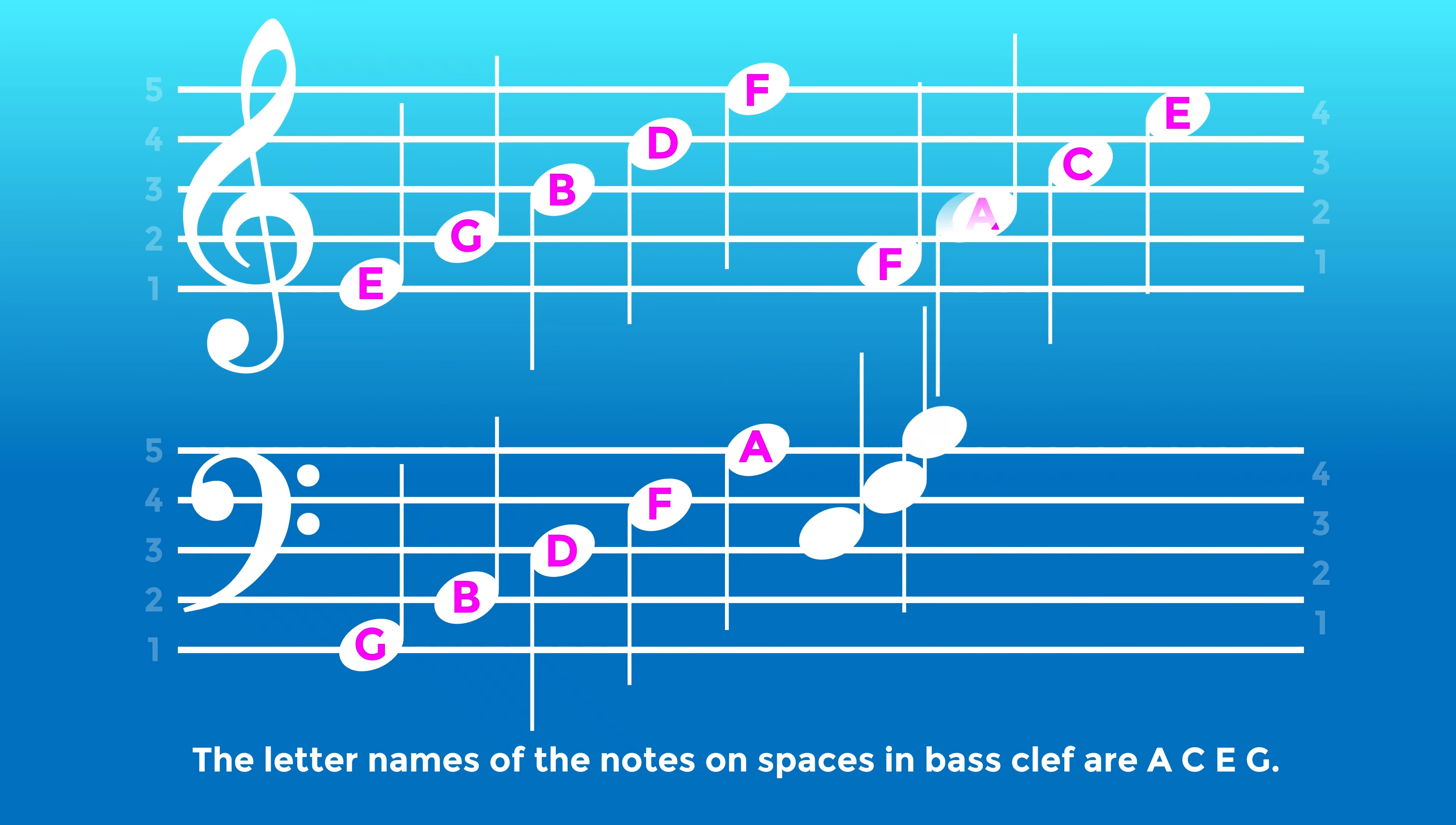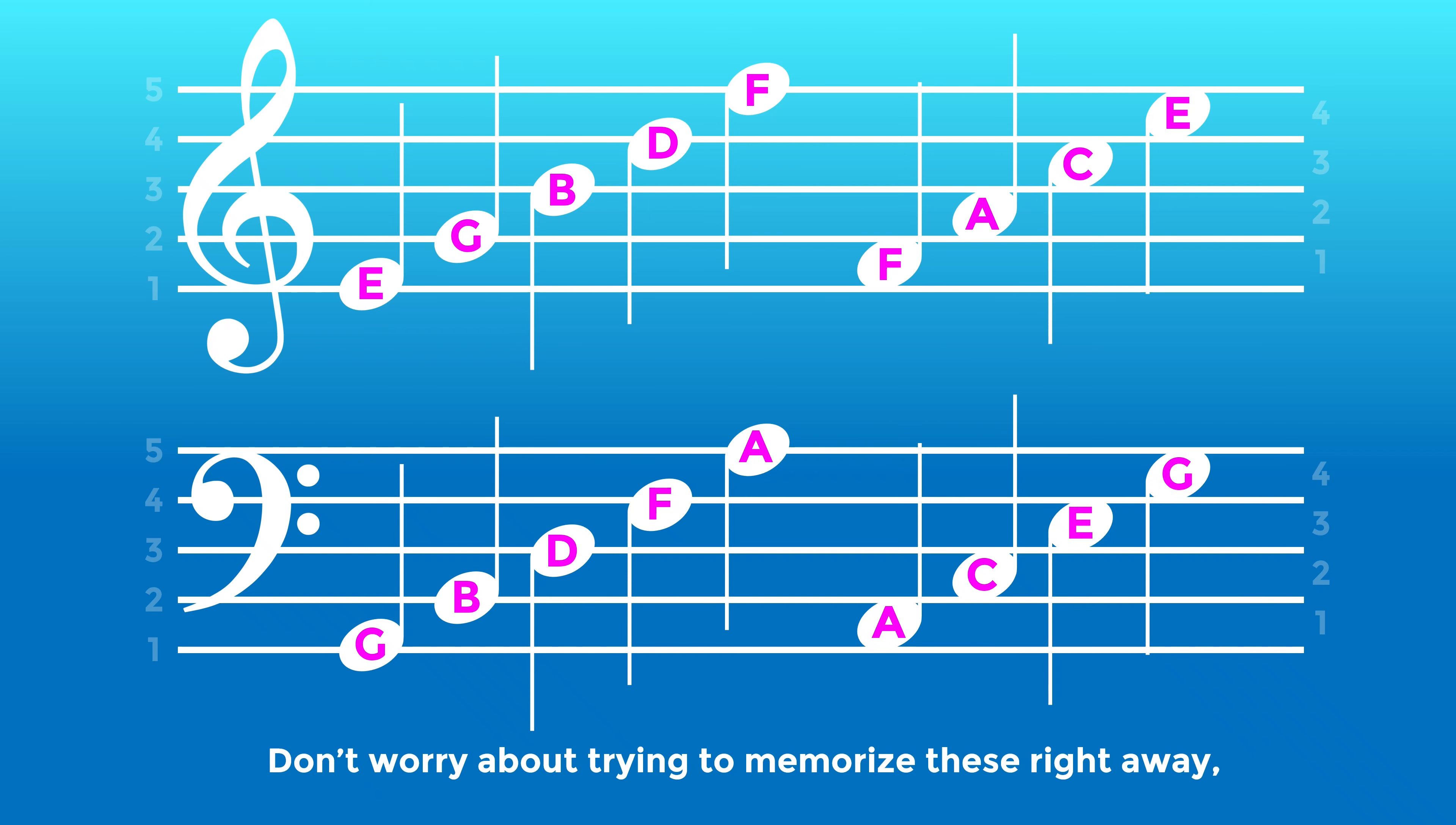The letter names of the notes on spaces in bass clef are A, C, E, G. Don't worry about trying to memorize these right away. After some practice reading notes, you'll gain the ability to recognize them instantly.